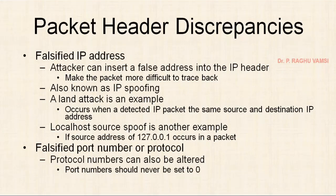Next is falsified IP addresses — it may be via spoofing or fabricated IP addresses. You may find some tools like IP changers, MAC changers, etc. An attacker can insert a false address into the IP header, also known as IP spoofing. A land attack is an example of this — it occurs when a detected IP packet has the same source and destination IP address. It is just like listening to itself. This is also called a land attack. Another example is localhost source spoof — whatever the packet reply is, it will be sent to 127.0.0.1. The system will keep falling into a loop — sending the packet out and again receiving the same packet.